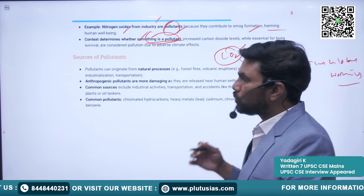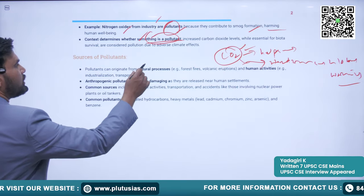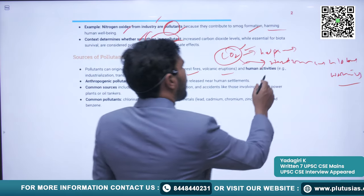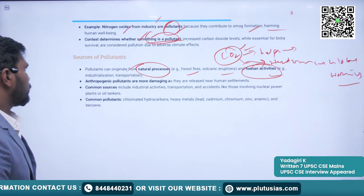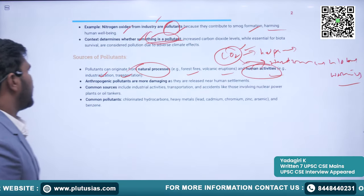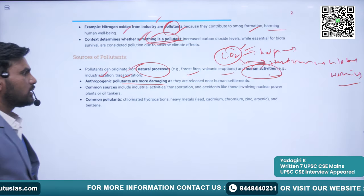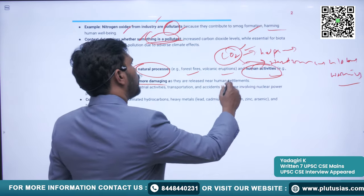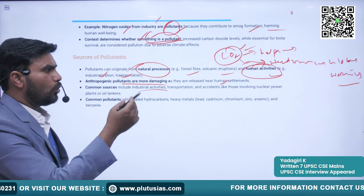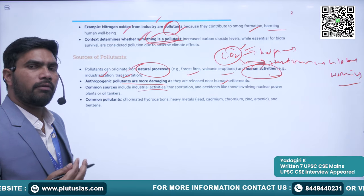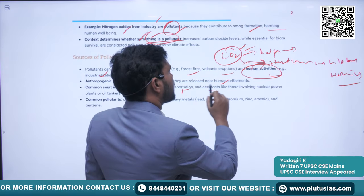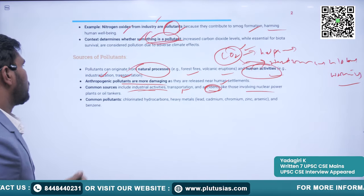Pollutants can originate from natural processes such as forest fires and volcanic eruptions, and also from human activities such as industrialization, transportation, and burning of coal. Anthropogenic pollutants are more damaging as they are released near human settlements. Common sources include industrial activities, transportation, and accidents like those involving nuclear power plants.